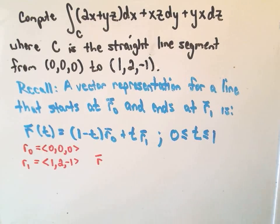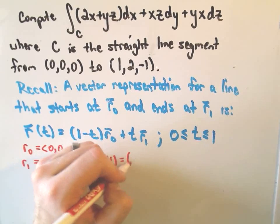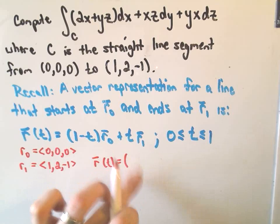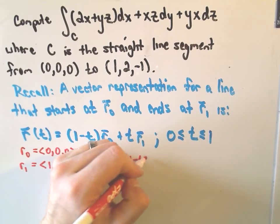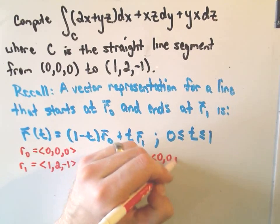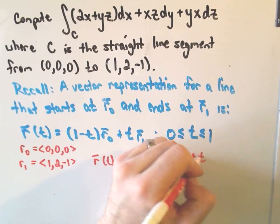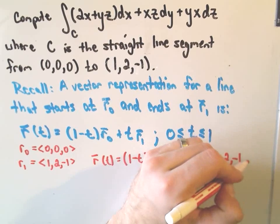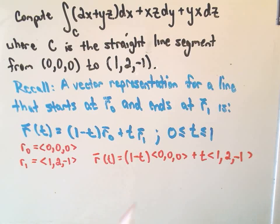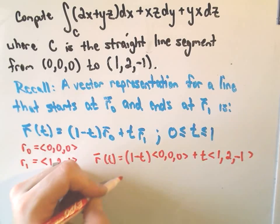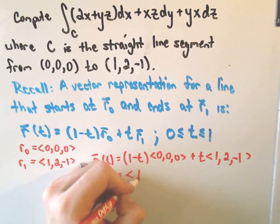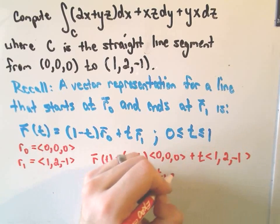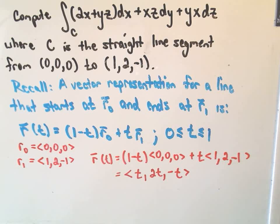So it says simply a vector representation for the line segment is we take 1 minus t times r0, which is just 0, 0, 0, plus we take t times r1. And again, r1 is just the point 1, 2, negative 1. So remember with vectors and scalars, you just distribute, and then we add respective components. We'll get t, 2t, and negative t. So it says this is our parametric representation for our line segment.